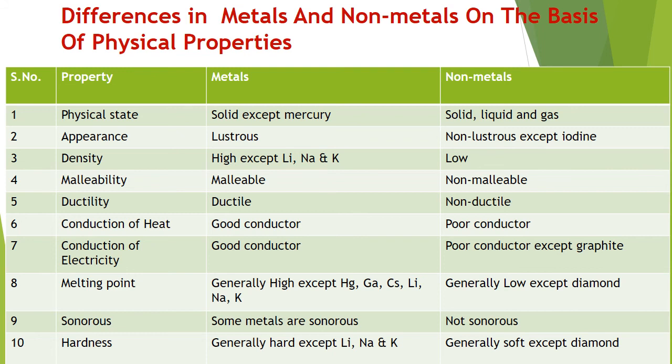Malleability — metals are malleable; non-metals are non-malleable. Ductility — metals are ductile; non-metals are non-ductile. Conduction of heat — metals are good conductors; non-metals are poor conductors. Metals are also good conductors of electricity; non-metals are not. Melting point — metals have high melting point; non-metals generally have low melting point, except diamond which has a very high melting point.